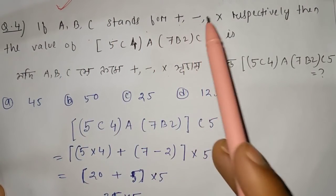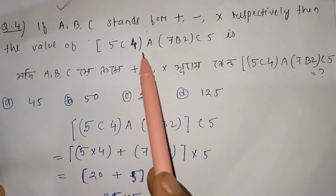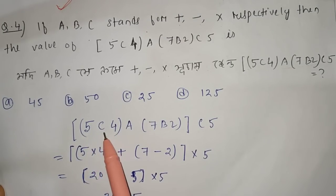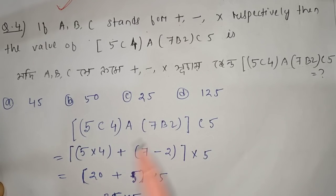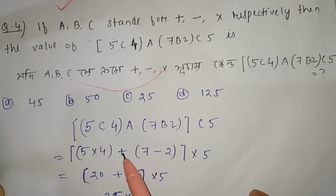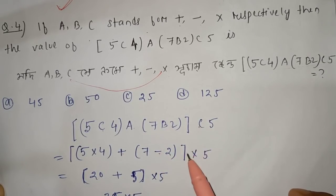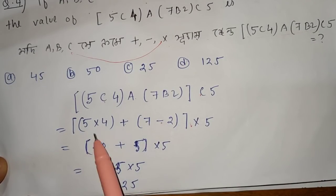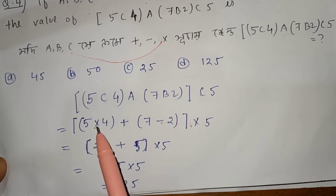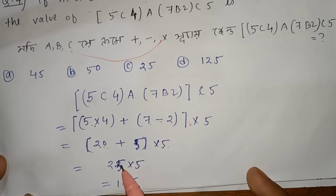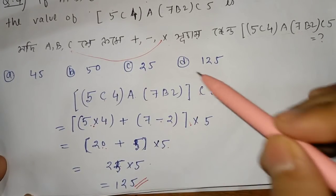If A, B, C stand for plus, minus, and multiply respectively, then find the value of 5C4. Since C means multiply, 5C4 equals 5 into 4 equals 20. Then 20 plus 5 equals 25, and 25 into 5 equals 125. So option D is the correct answer.